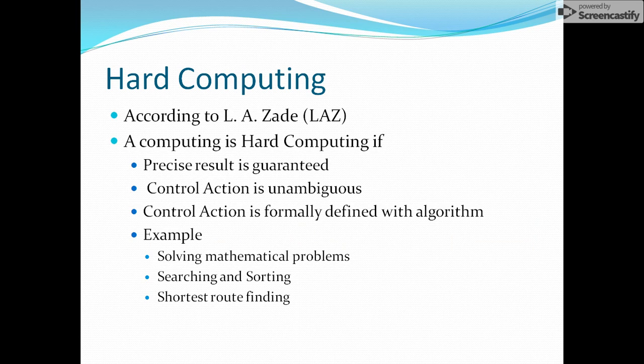Computation is basically a process of getting input, working on it, and giving output. We say computation can be either hard computing or soft computing. Hard means something you cannot easily mold — like iron, you cannot mold it into another shape until you melt it. Hard computing basically means you have a precise result and an unambiguous control action.